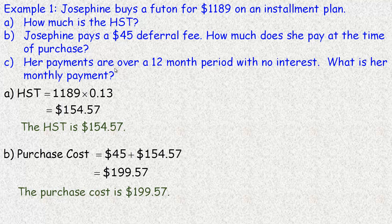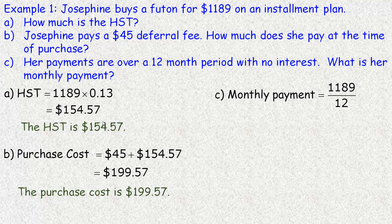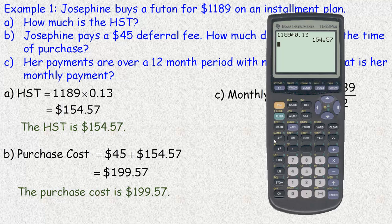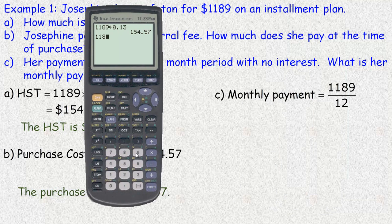In part C, her payments are over a 12-month period with no interest. So what is her monthly payment? To calculate it, she has already paid the tax of $154.57 and the deferral fee, so all she has left to pay is the original purchase price of $1,189. If it's over 12 months, we divide that by 12. So we take $1,189 and divide it by 12. Since it's money, we round to two decimal places, so it would be $99.08 per month.